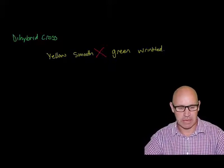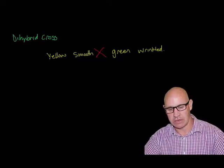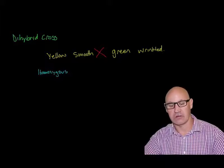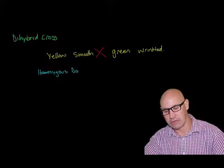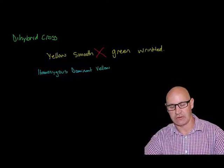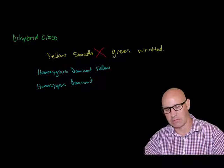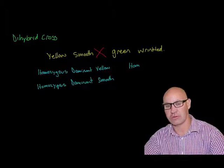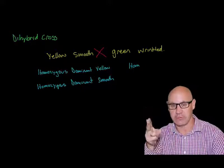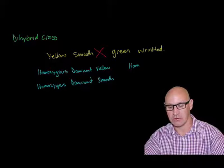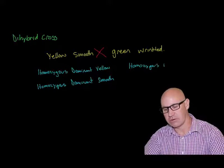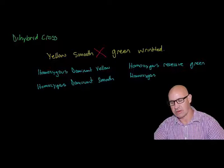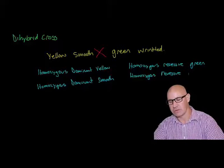We're looking at pure breeding parents first. Yellow is the dominant allele, and this parent is homozygous dominant for yellow colour and homozygous dominant for smooth. The green parent is homozygous recessive — for it to be expressed, both alleles need to be green. Similarly, wrinkled is also homozygous recessive, as that is the recessive allele for wrinkled.